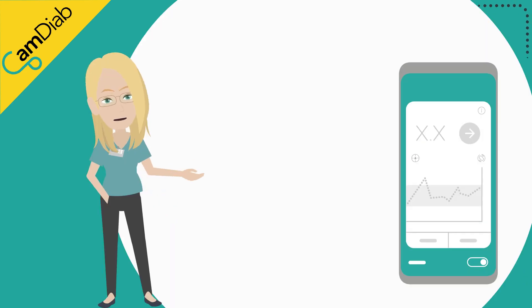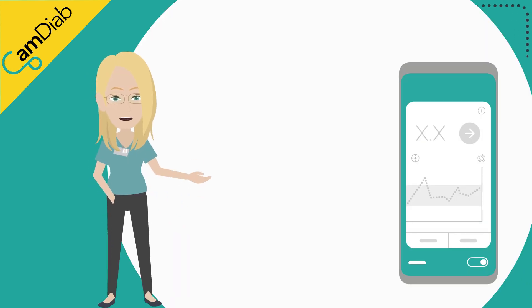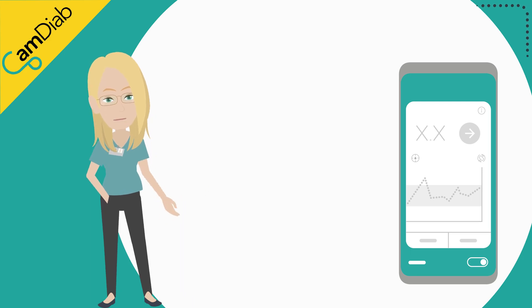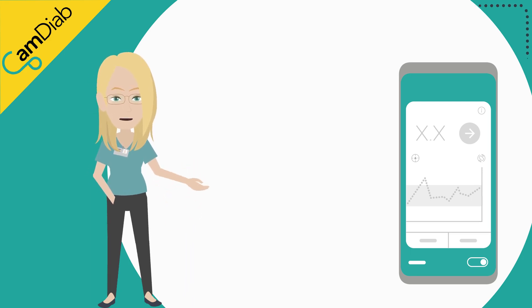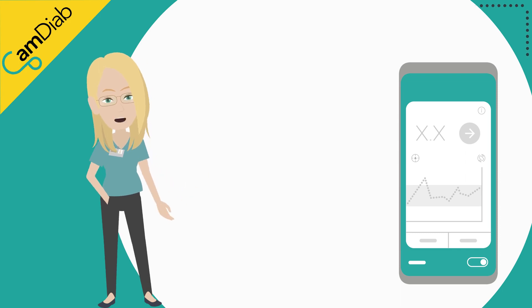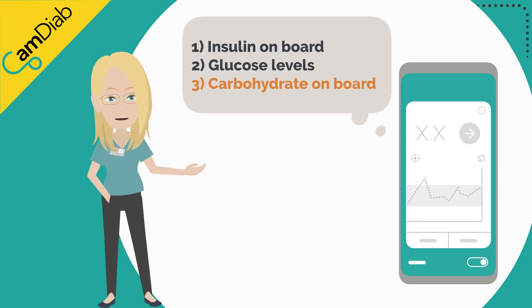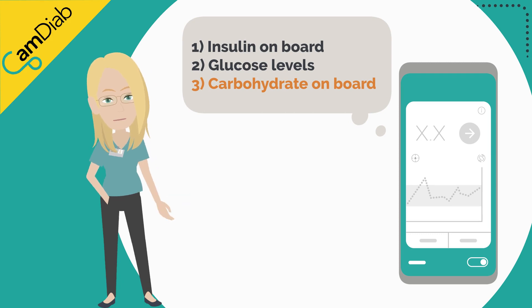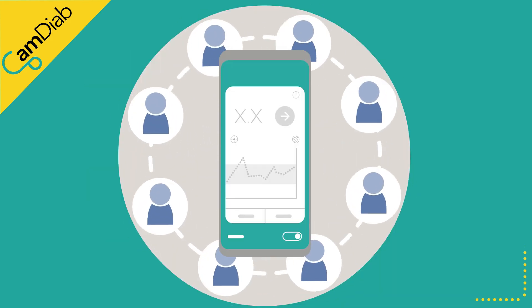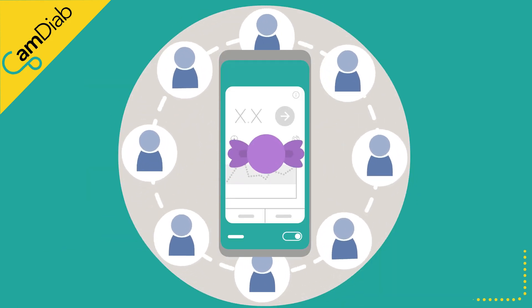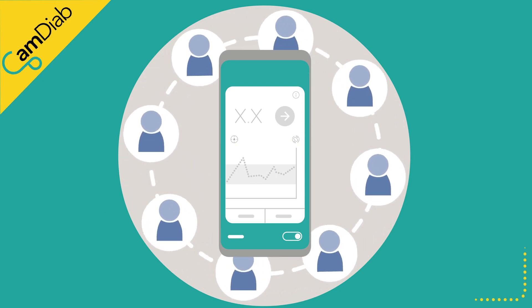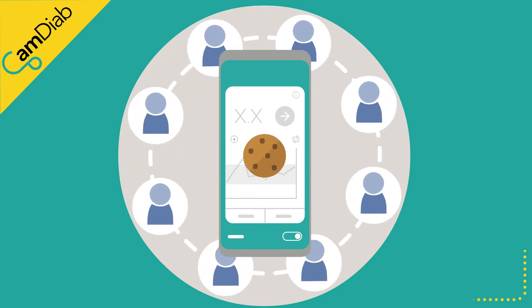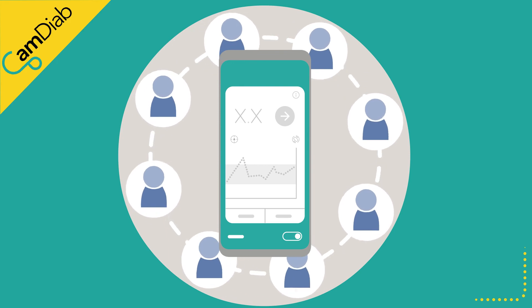When someone enters carbohydrates into the add meal function, no insulin bolus is immediately given. Add meal gives the algorithm information about the amount of carbohydrates on board, which it uses as one of the factors when deciding how much insulin to deliver every 8 to 12 minutes. The algorithm will only give extra insulin based on the current glucose trends and what it predicts will happen to glucose levels over the next few hours.